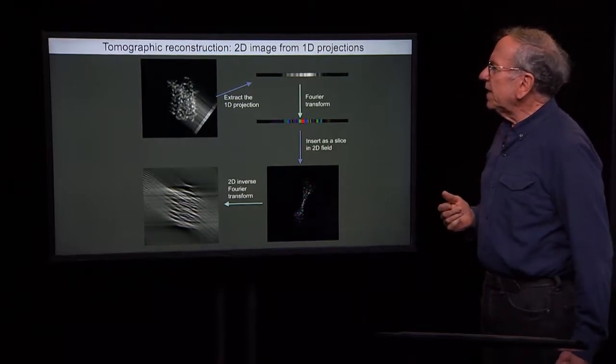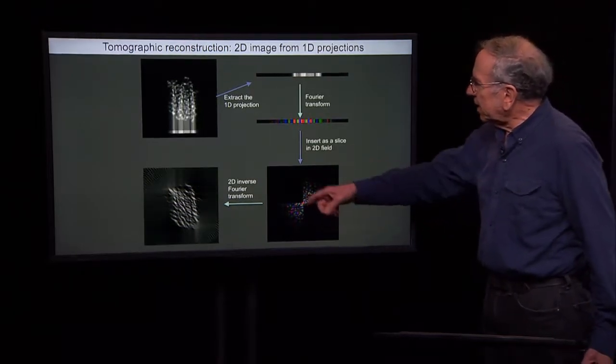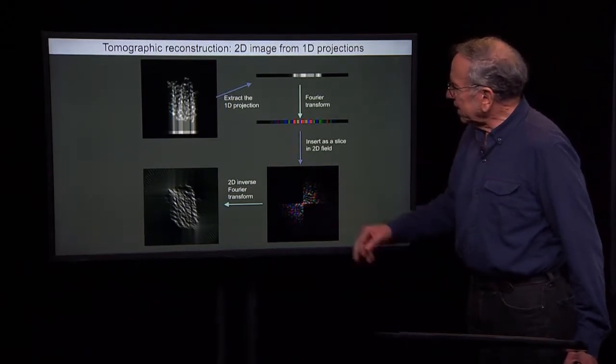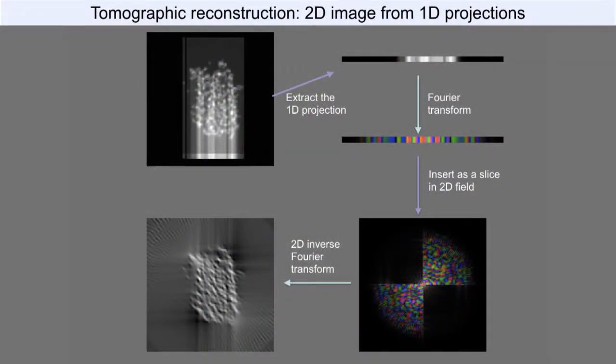So if I fill in some of these projection directions, I fill in, in this case, half of the Fourier transform. And, of course, given the Fourier transform, I can now go back to real space, and this is now my reconstruction of this object.